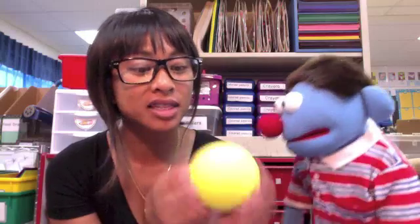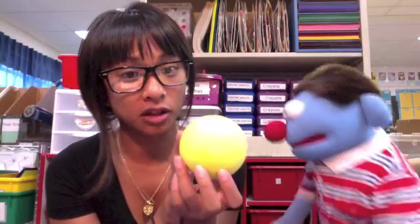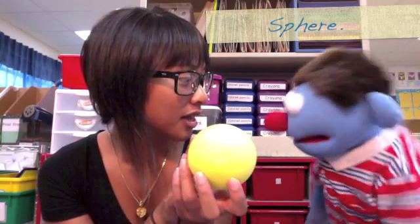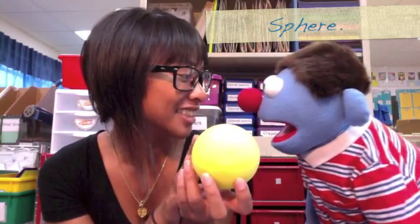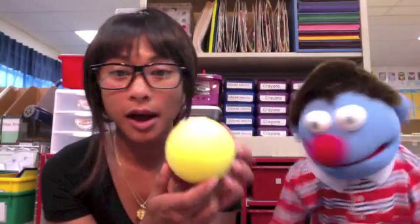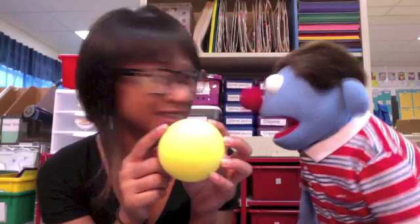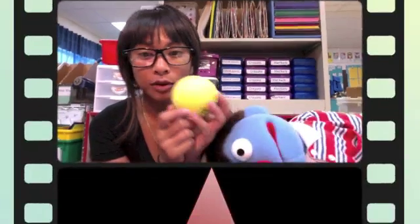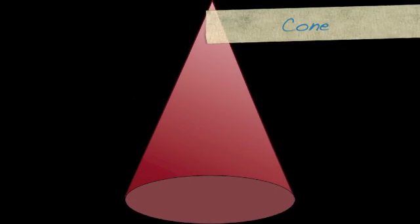What is this called, Kai? That's a ball! Yes, we can play with the ball, but the fancy word for a ball as a solid figure is called a sphere. Can you say sphere? A sphere! A sphere has no vertices and no edges, and it has a curved surface. And a cone has one vertex, a circle face, and a curved surface, so it can roll too.